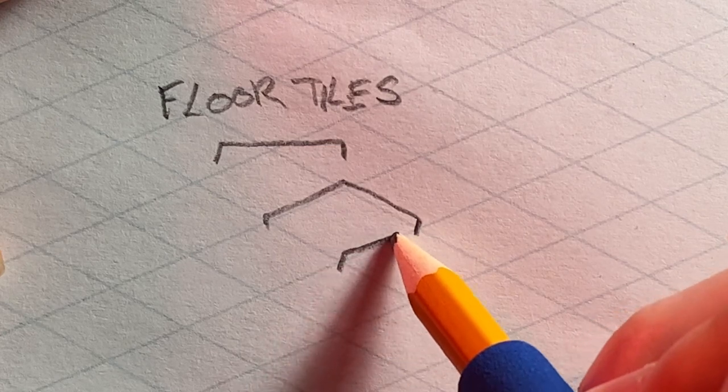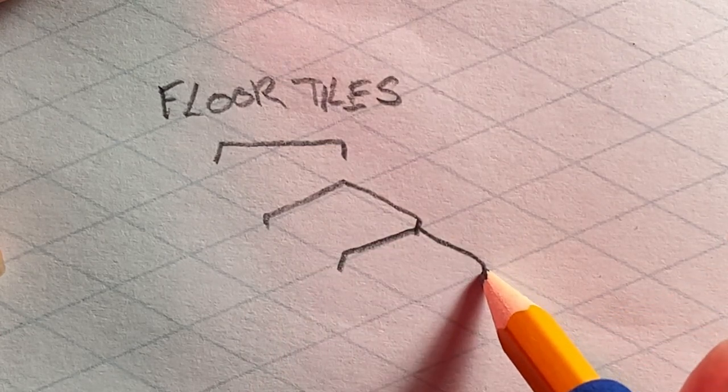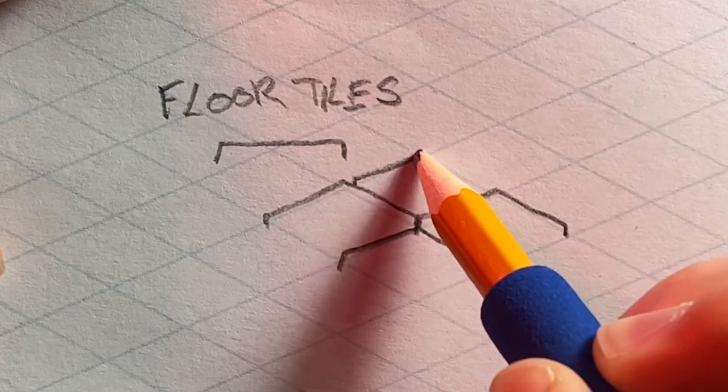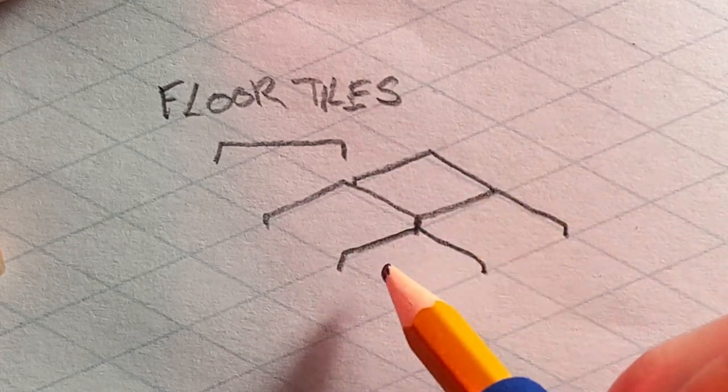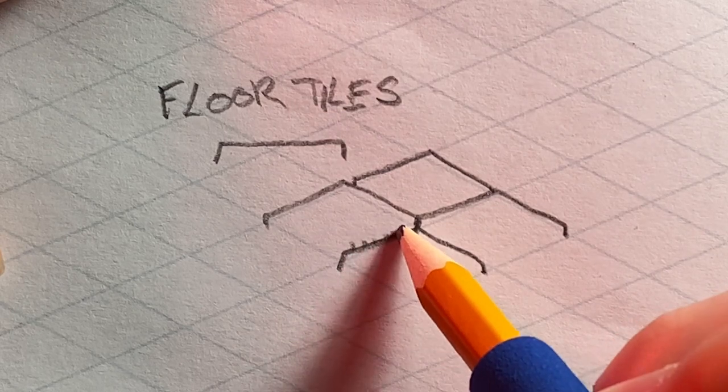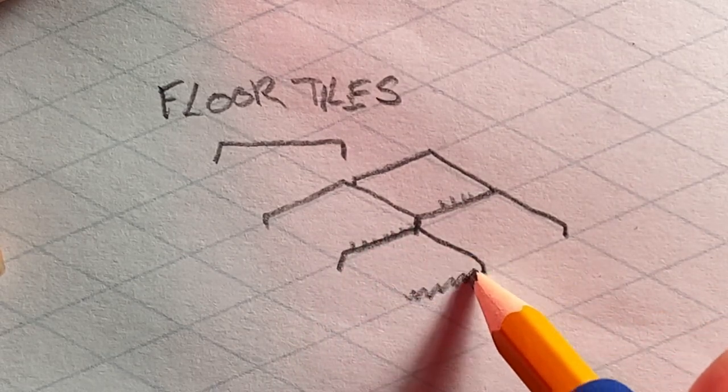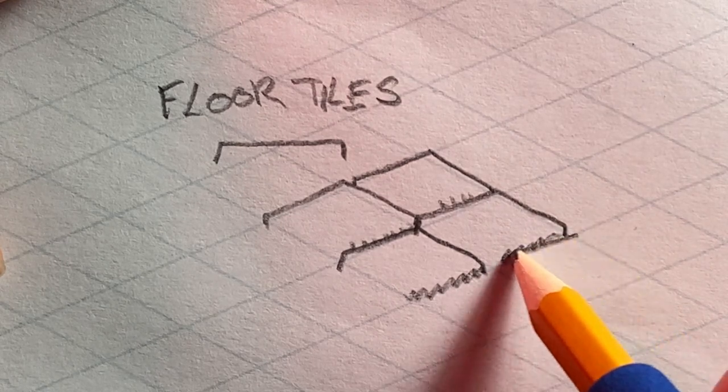If you draw each of these tiles individually with a little mark going down into the ground, it's going to give it volume. It's going to make things look old and uneven and characterful, and it's going to make your map much more believable and beautiful to look at.